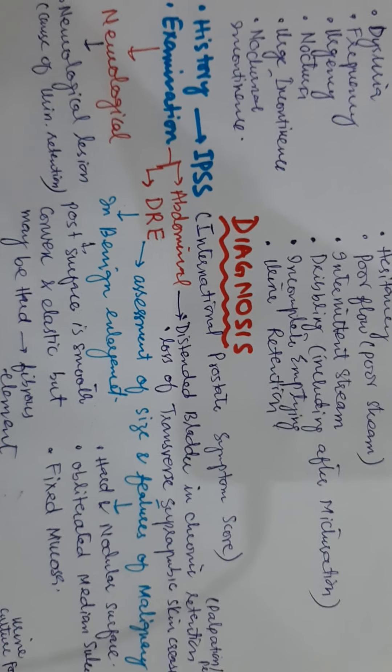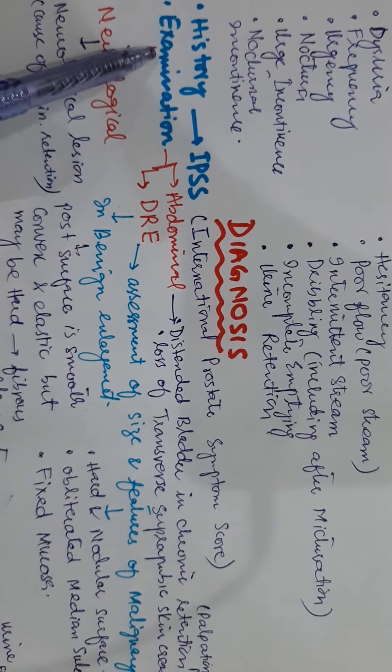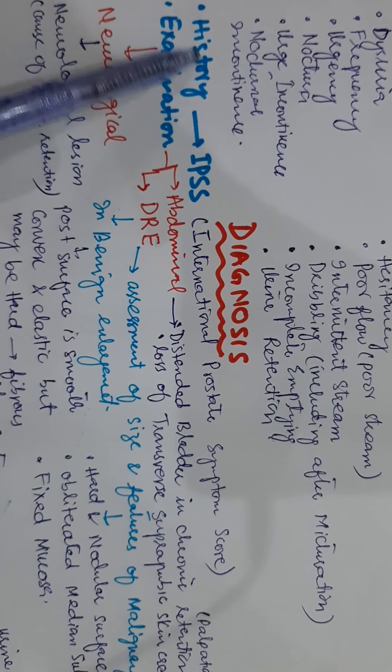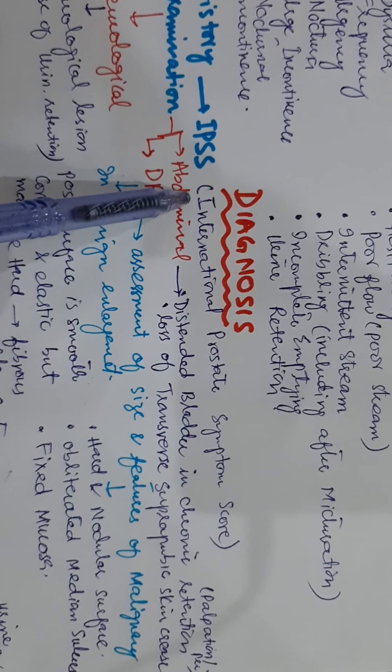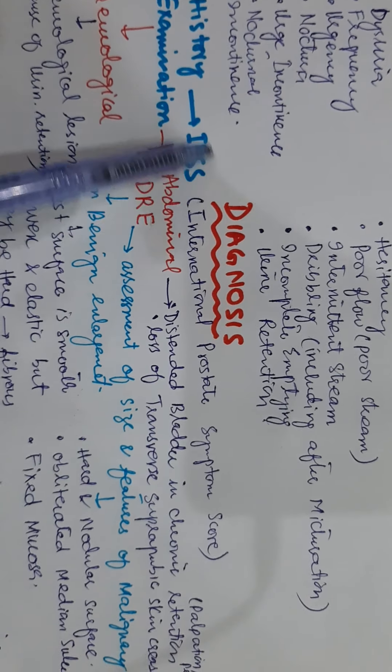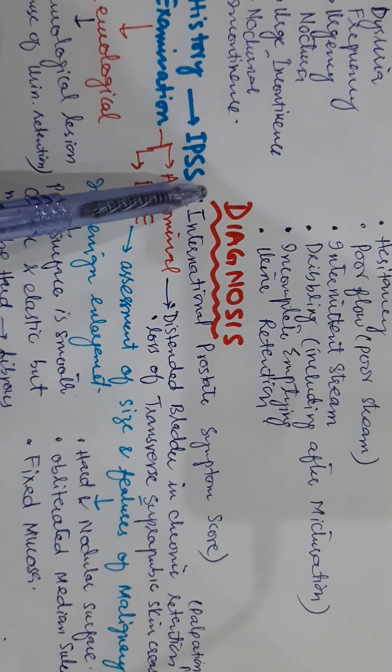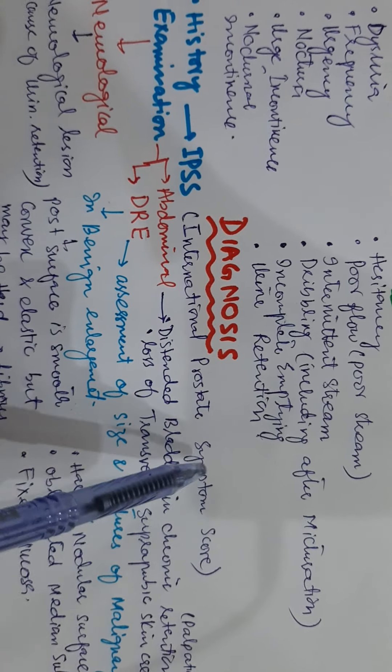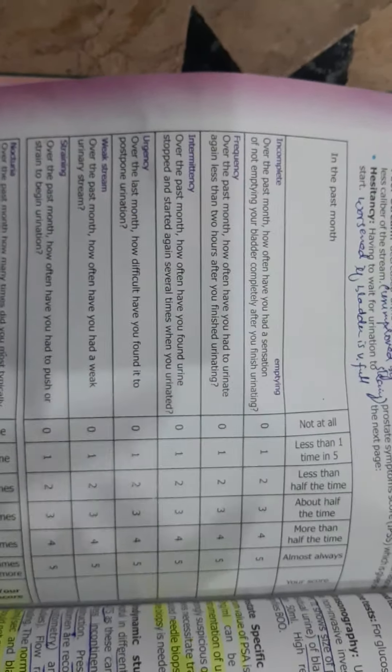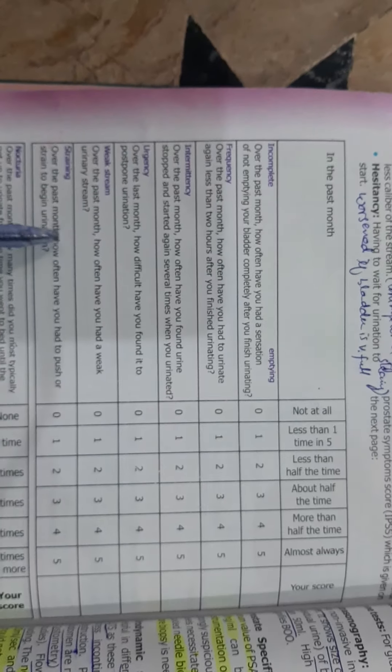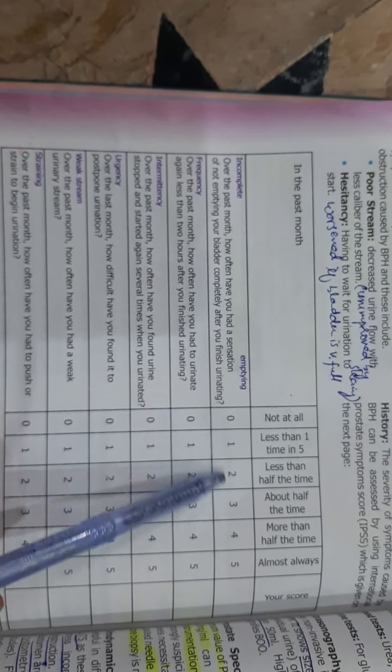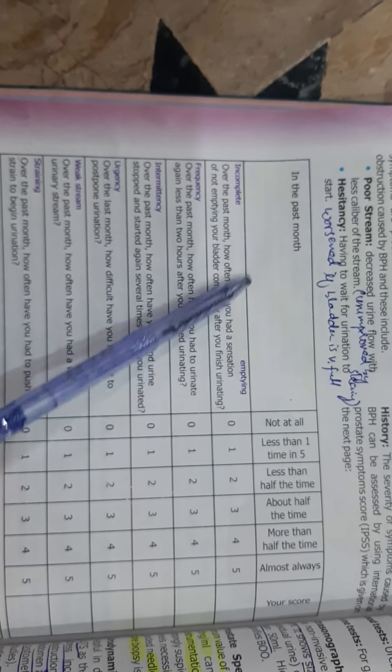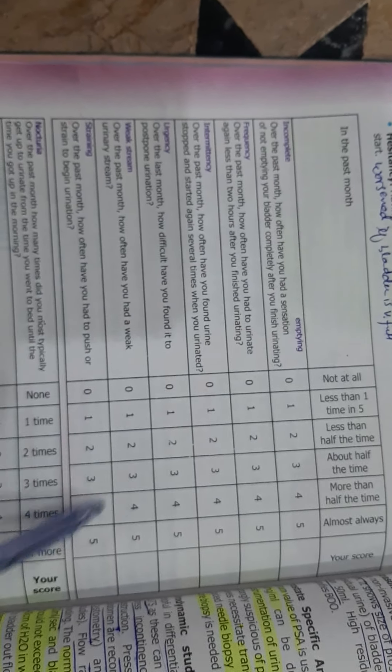Now for the diagnosis of BPH. First of all, we take the history of the patient. In the history, there is an important score called the IPSS, International Prostate Symptom Score. Here is the IPSS score system. The patient is given a flow chart to fill for the whole month, and at the end of the month, the score is calculated.